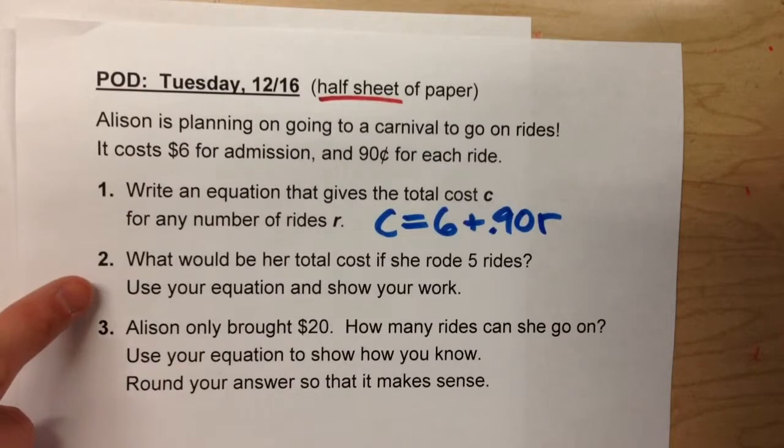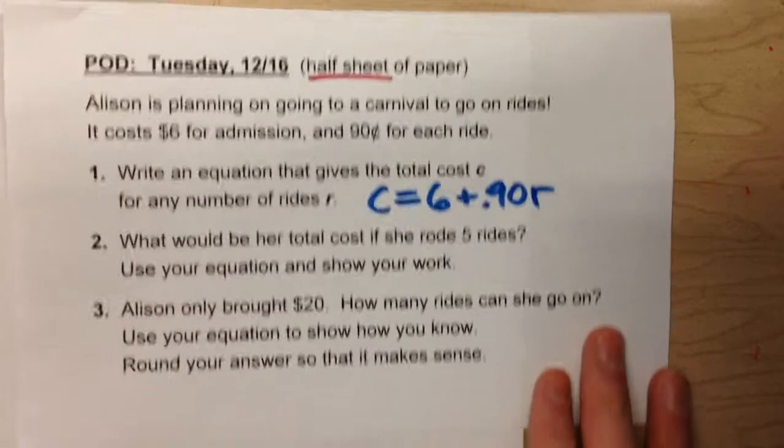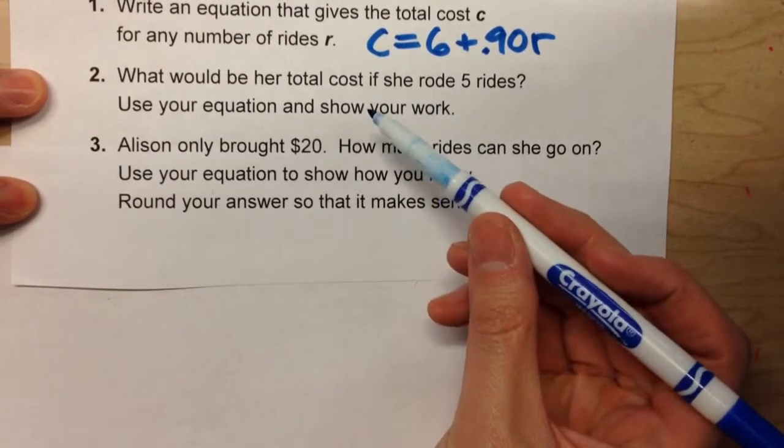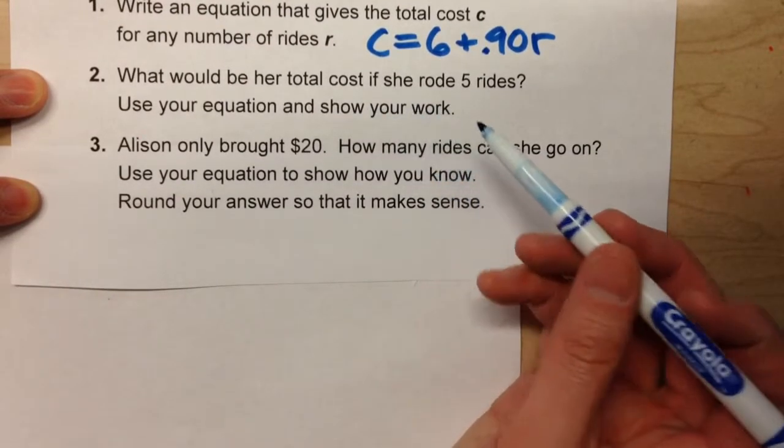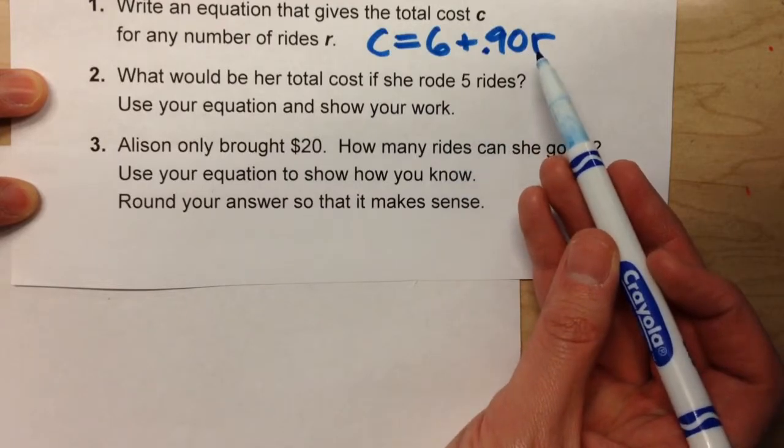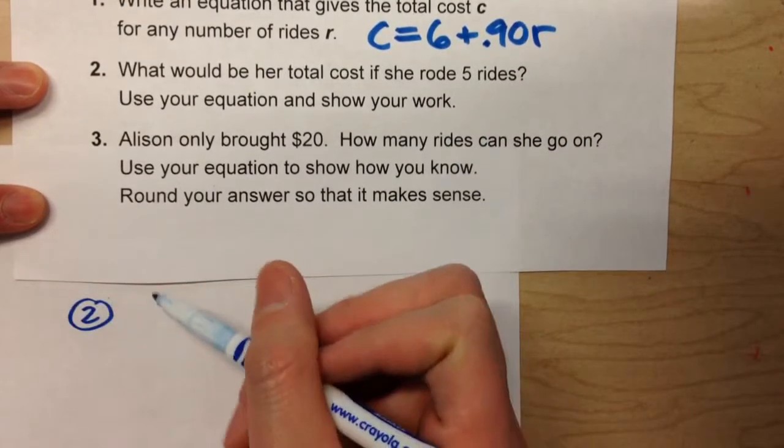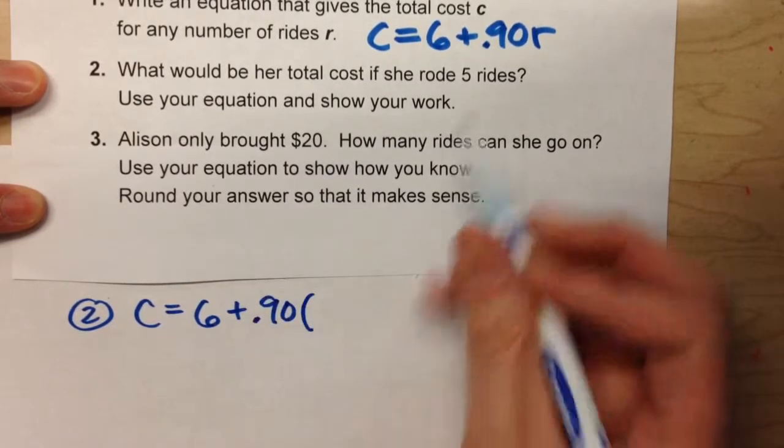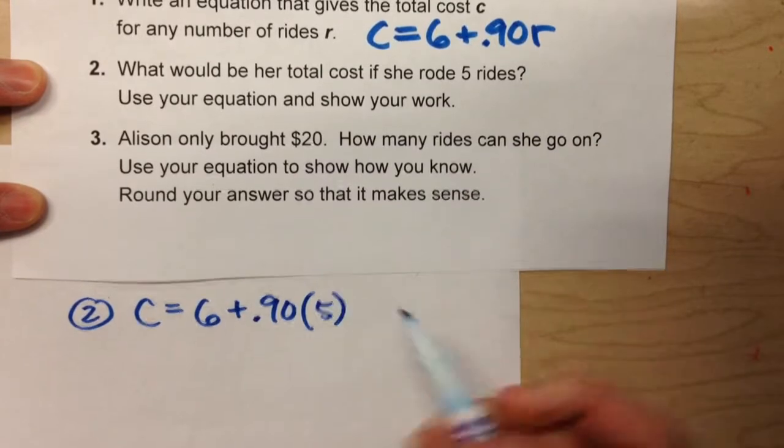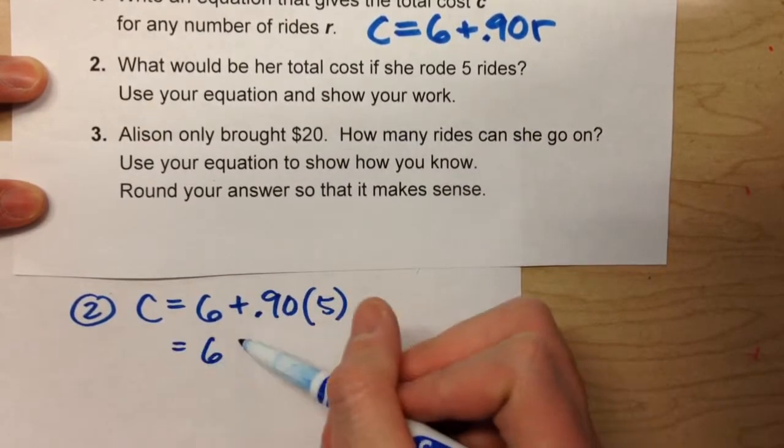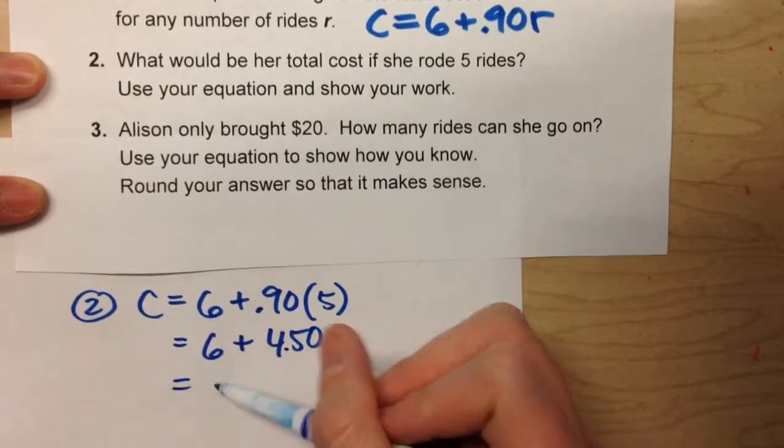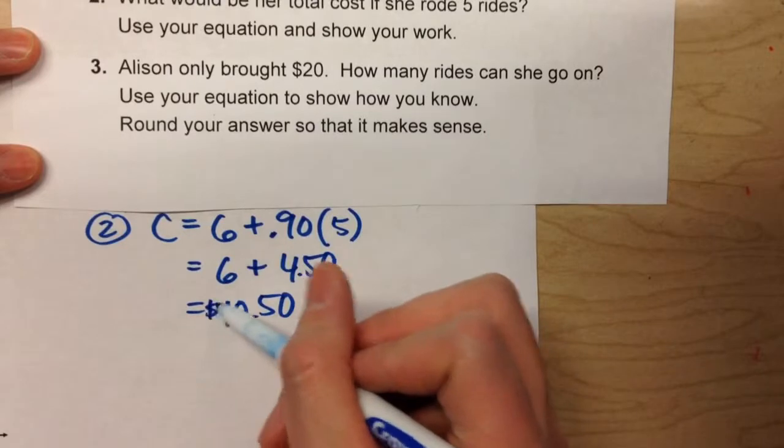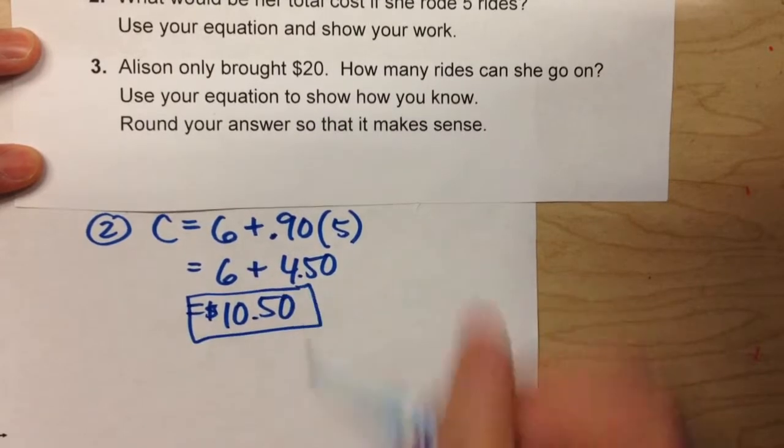So for number two, what would be her total cost if she rode five rides? To solve the total cost, all we have to do is plug five in for R in our equation. So number two would be C equals 6 plus .90 times five. And this is what we've been doing all along, where we would just plug it in, calculate it, $10.50. And that would be our answer.